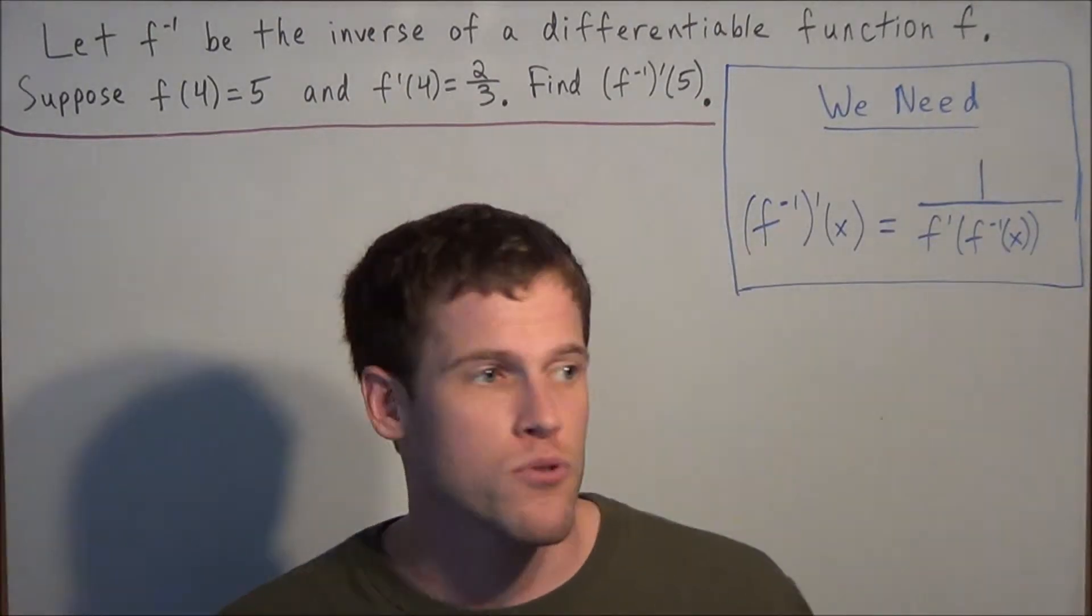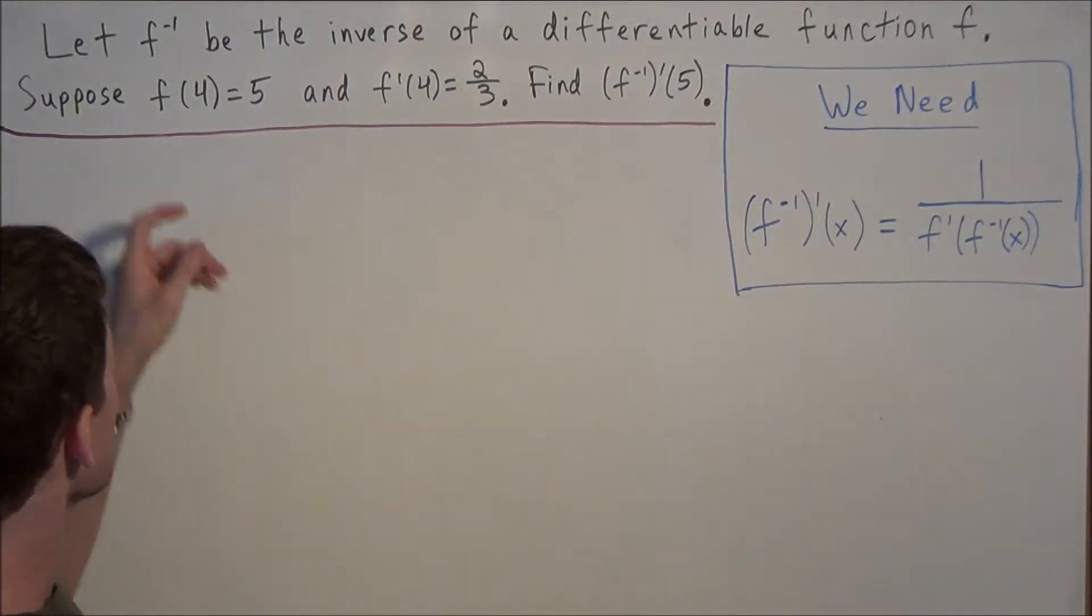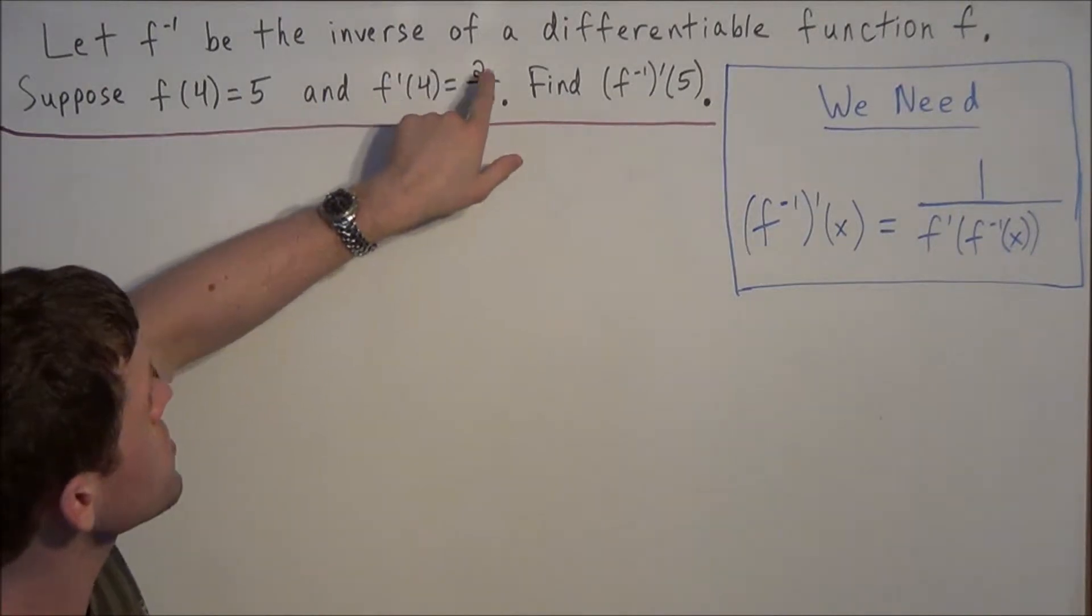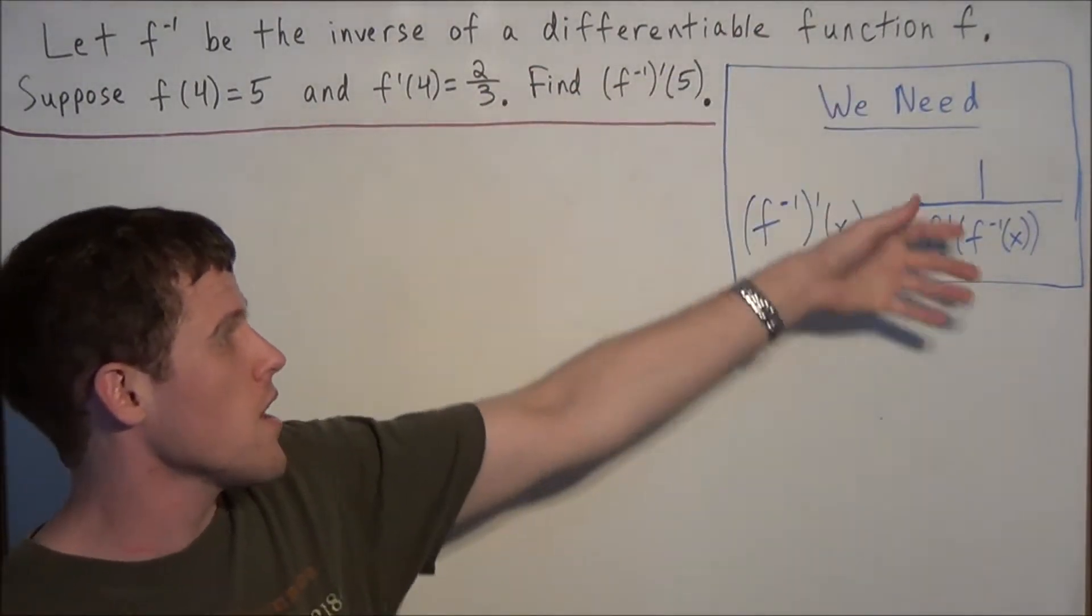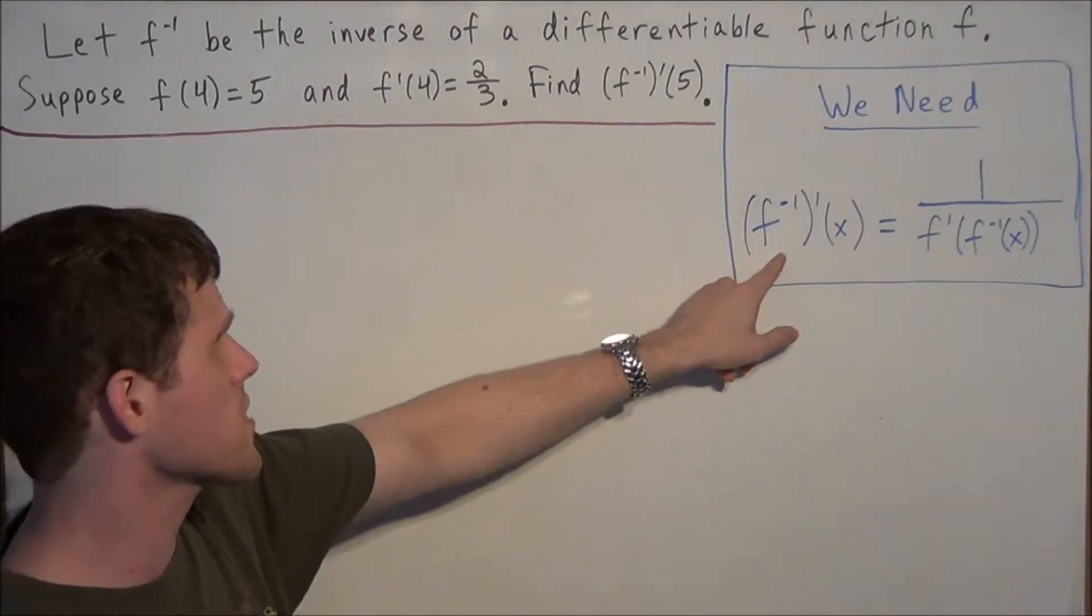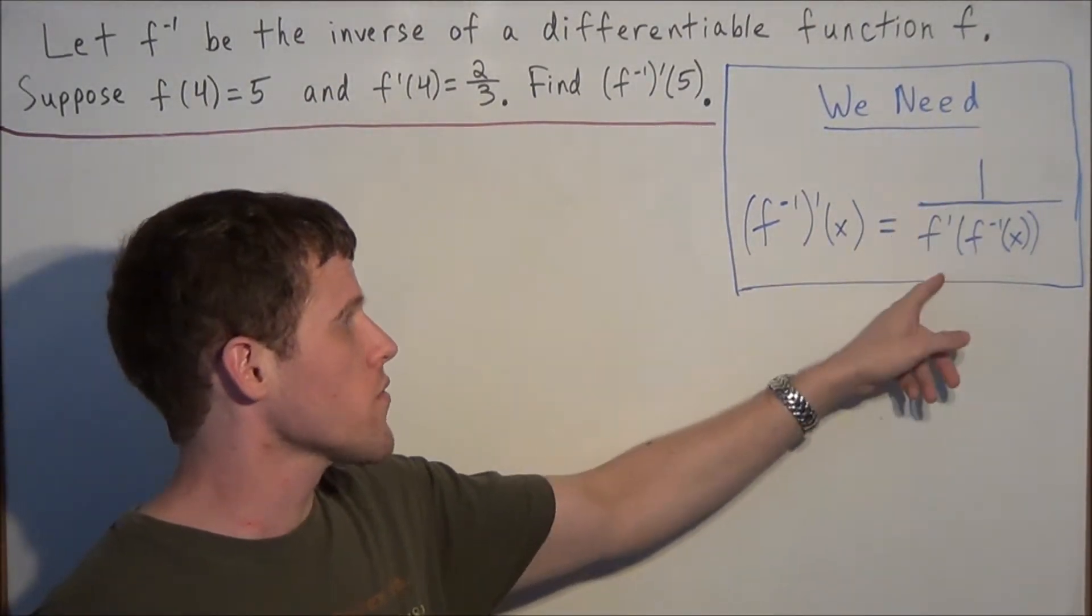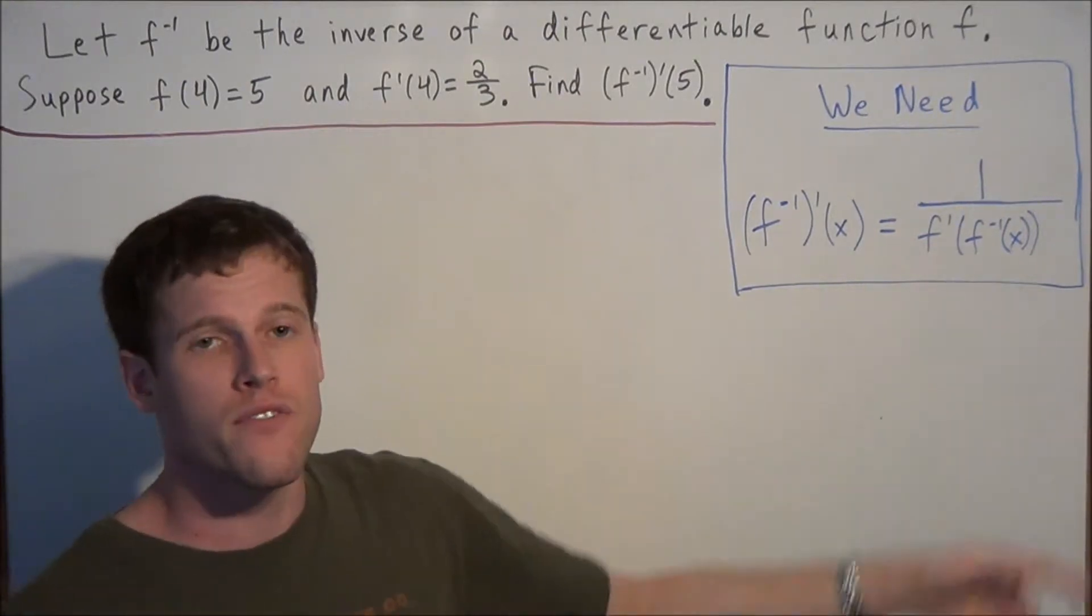For this example, we want to make use of the following equation. Our initial conditions, that f inverse is the inverse of a differentiable function f, allows us to use this equation. This tells us that the derivative of f inverse at x equals 1 over f prime at f inverse of x.